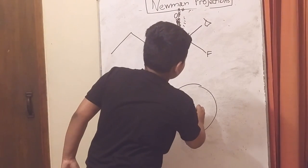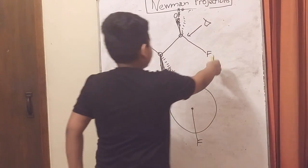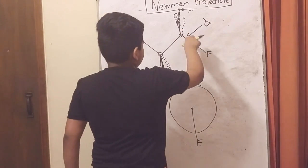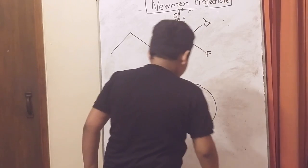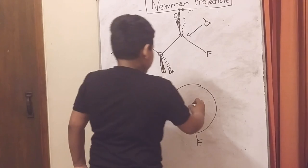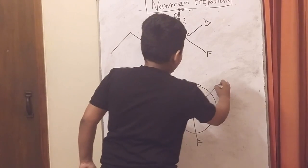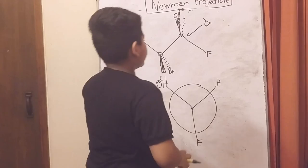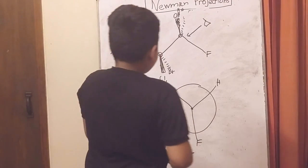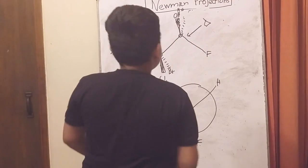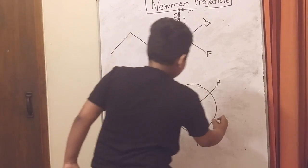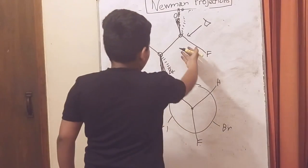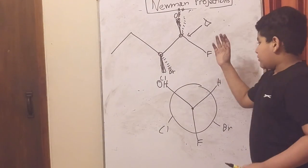At the bottom there is going to be a fluorine bond because this fluorine atom is coming from the lower part. On the upper part we have the hydroxyl and the hydrogen. Remember this is the dash bond of the hydrogen. Since this is the back carbon we can't see it.